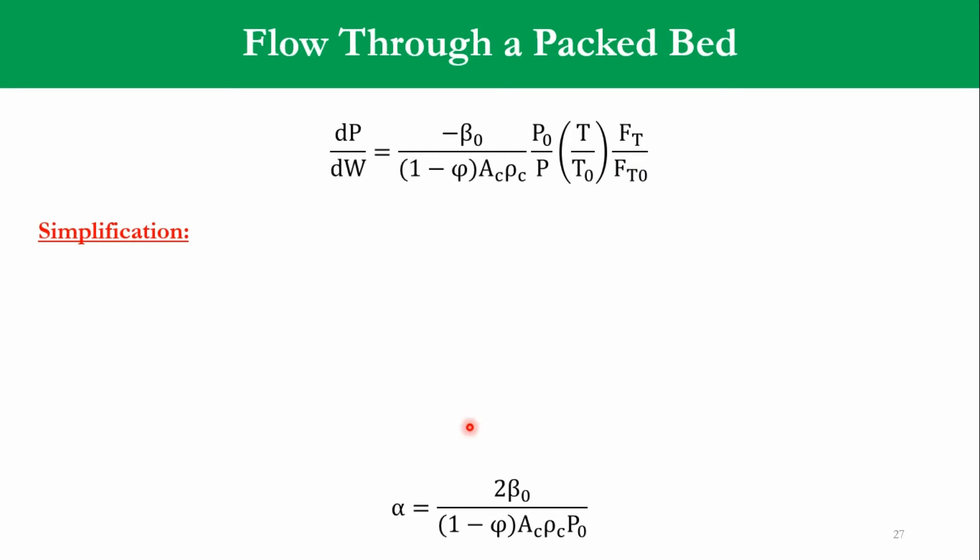Once we simplify it, we are defining another parameter, which is α. α is equal to 2β0 over 1-φ Ac ρc P0. Now, if you look at these two correlations, β0 is there, 1-φ is there, Ac is there and ρc is there. Only P0 is missing. So, multiplying and dividing this by P0 and obviously by 2 as well. Accordingly, we can get the transformation of this equation as minus α over 2P P0 over P times T over T0 times FT over FT0. Very simple relationship that we have replaced β with α and simply we are just simplifying the equation.